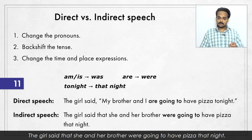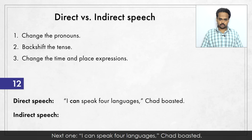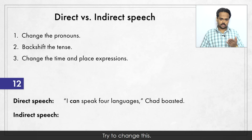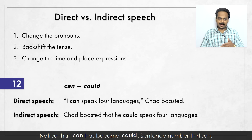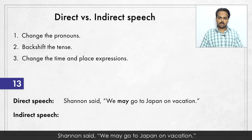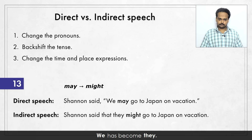Next one: "I can speak four languages," Chad boasted. "Boast" means to brag or talk proudly about yourself. The indirect speech sentence is: Chad boasted that he could speak four languages. Notice that "can" has become "could". Sentence number 13 – Shannon said, "We may go to Japan on vacation." Shannon said that they might go to Japan on vacation. "We" has become "they". "May" has changed to "might" because that's the past form.